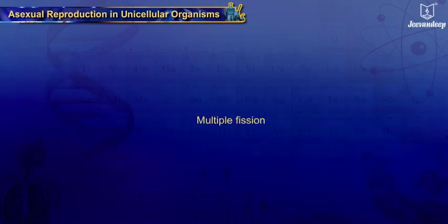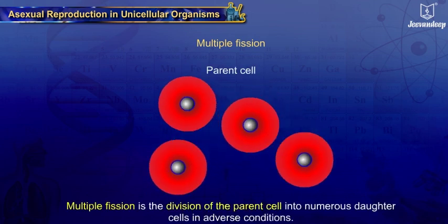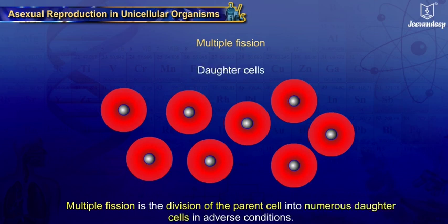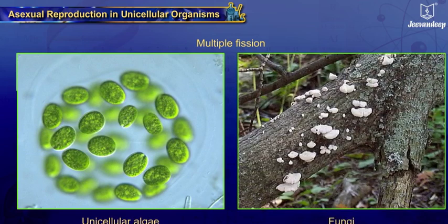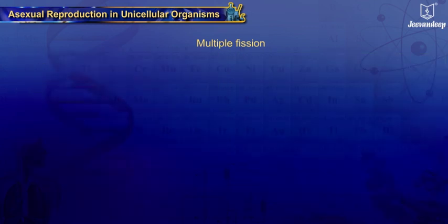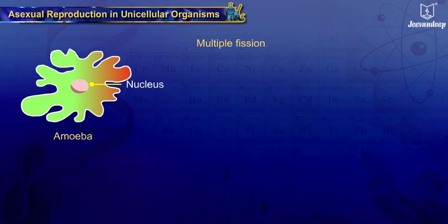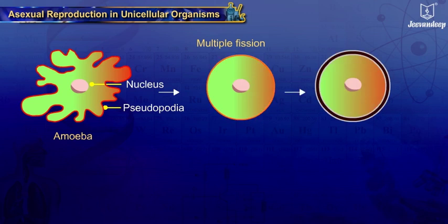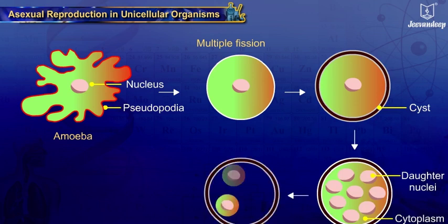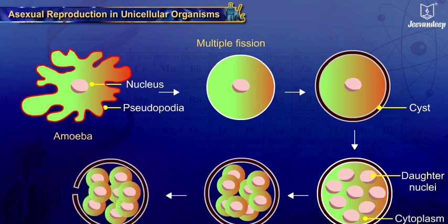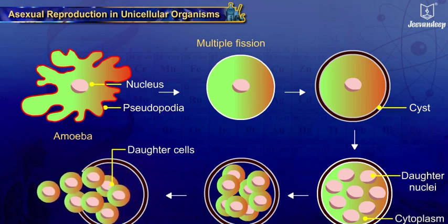Multiple fission is the division of the parent cell into numerous daughter cells. Some protozoans, unicellular algae, and fungi reproduce by this method during unfavorable conditions. The amoeba withdraws its pseudopodia, becomes round, and secretes a hard covering called a cyst around itself. Inside the cyst, the nucleus divides many times, followed by division of the cytoplasm, resulting in many daughter cells. The cyst bursts and the daughter cells are released during favorable conditions.